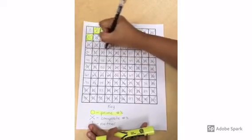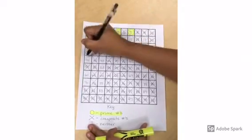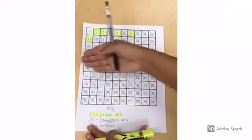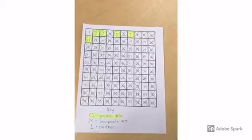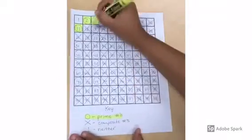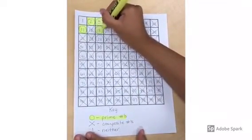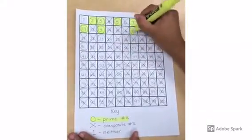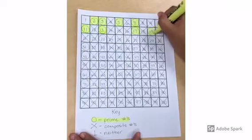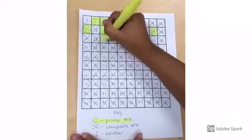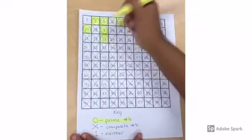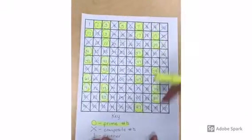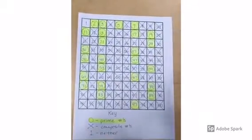Do not jump around. You should have a total of twenty-five numbers circled. Now you can highlight the remaining prime numbers. Highlight your numbers from top to bottom, left to right. Once you're finished highlighting, count to make sure there are twenty-five total.